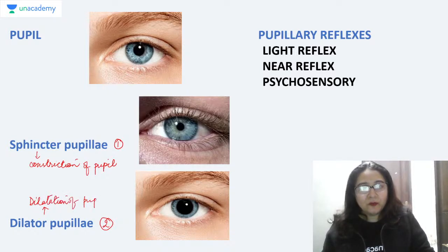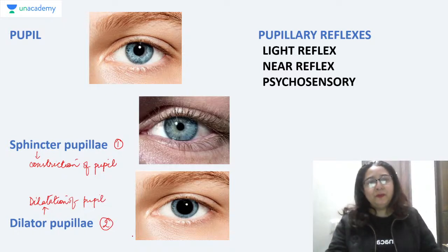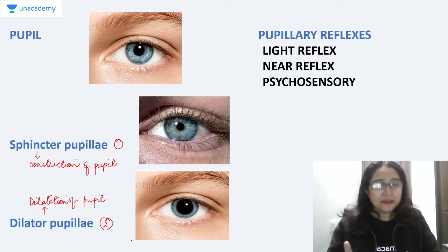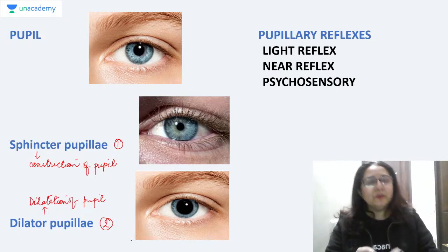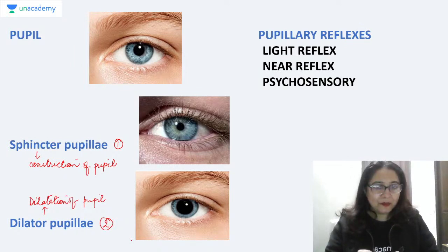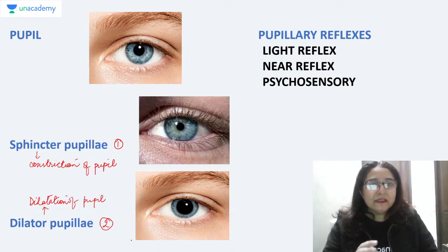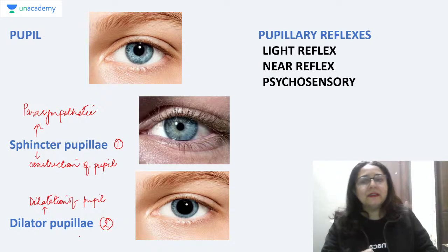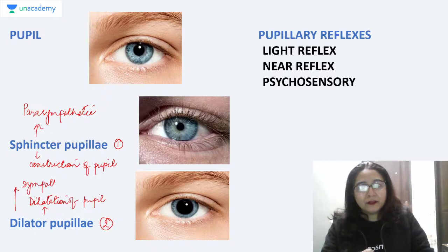An important point: dilatation of the pupil is not a passive process. It doesn't mean that when the pupil is not constricting it will automatically dilate — dilatation is also an active action due to contraction of the dilator pupillae muscle. The baseline pupil size is due to the balance between these two muscles. The sphincter pupillae is under parasympathetic control and the dilator pupillae is under sympathetic control.